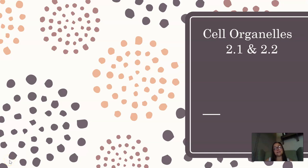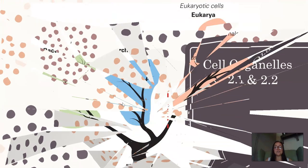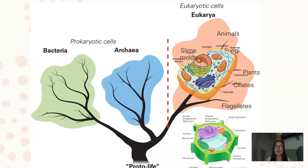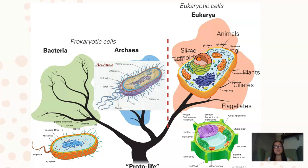This video covers cell organelles with a brief discussion of prokaryotes and eukaryotes, focusing on AP Biology curriculum sections 2.1 and 2.2. When we look at cells in general, we have two evolutionary categories: prokaryotic cells and eukaryotic cells. In the Eukarya domain, that includes plant cells, animal cells, fungi, protists — basically cells that have a nucleus and organelles, which will be the main focus of this video.